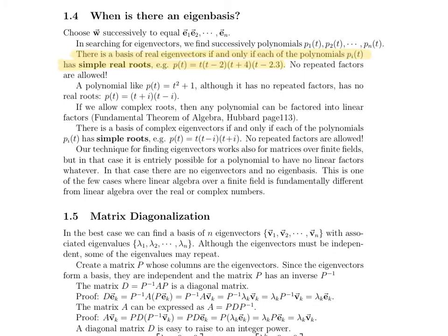Here's an example of a polynomial that doesn't do that. So take a look at this one, a polynomial like this that says t squared plus one, it doesn't have any repeated factors, but it has no real roots. So that's an example of what would not tell us that we have a basis of real eigenvectors. So if we allow for complex roots, then any polynomial can be factored into linear factors, which you can justify with the fundamental theorem of algebra and read more about in the Hubbard textbook. But most of the time, complex roots are not super helpful for us. Sometimes, depending on the application, we're really only interested in real answers. But sometimes they are.